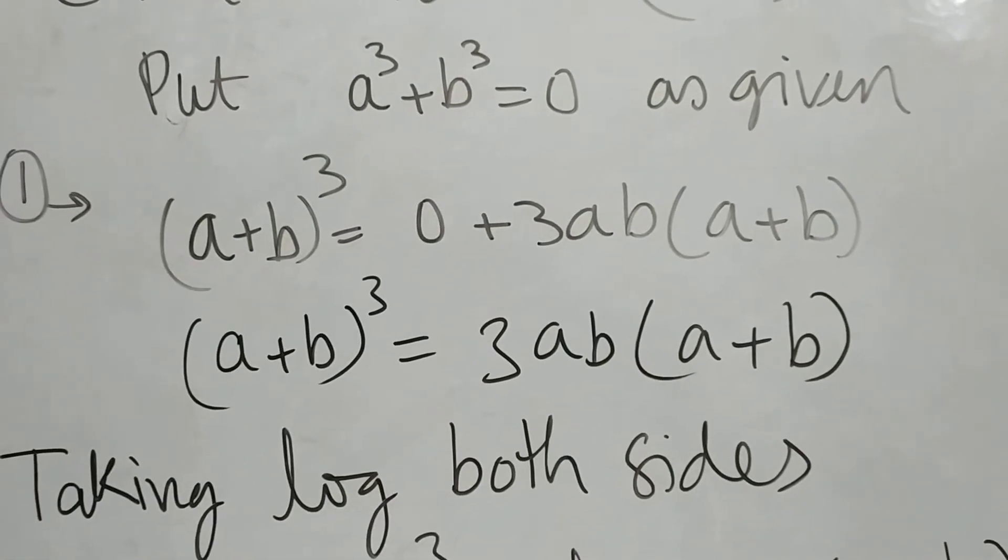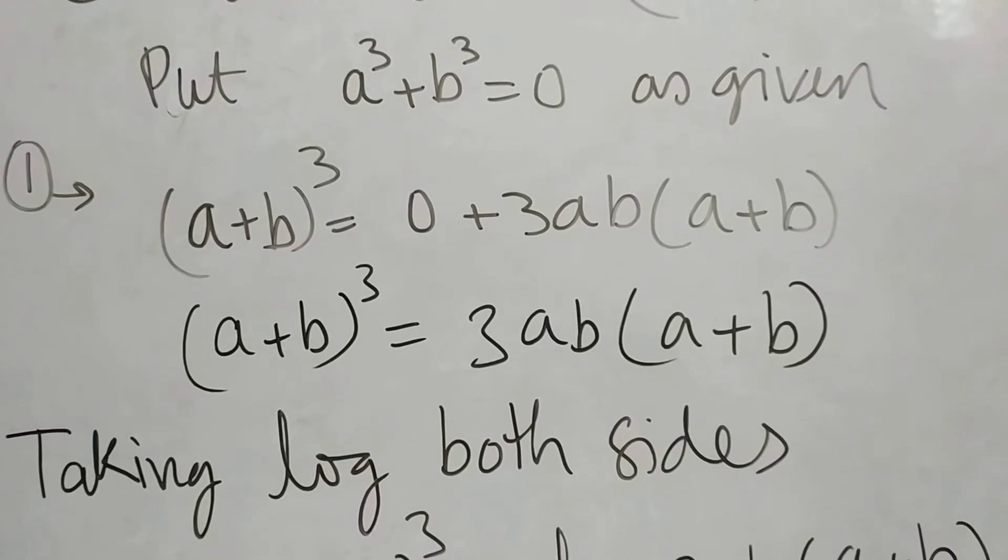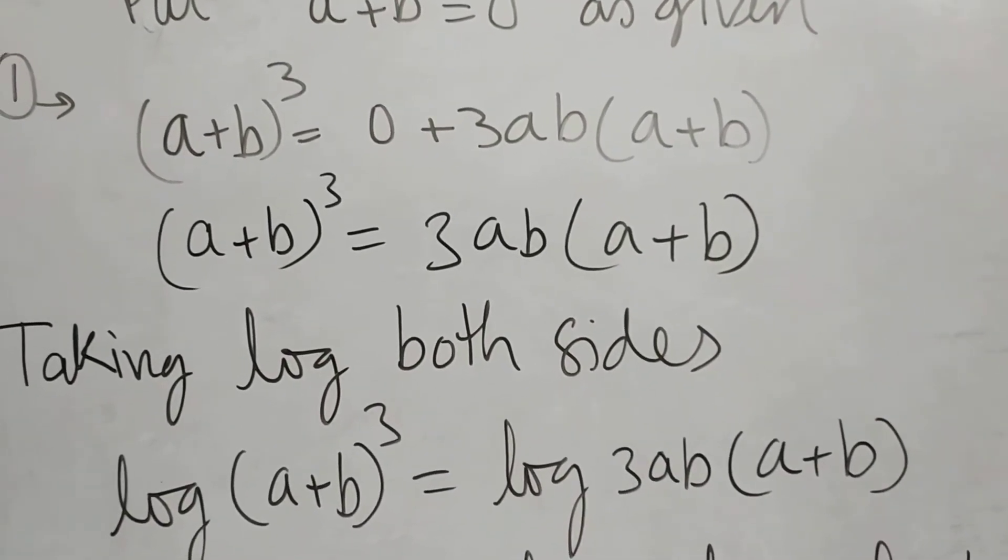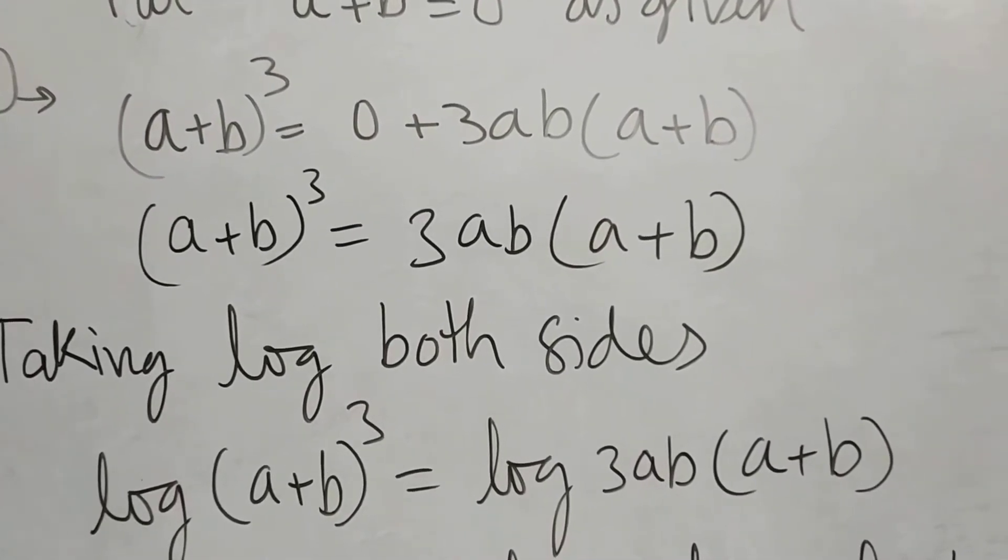Now taking log both sides. This becomes log(a+b)³=log[3ab(a+b)].